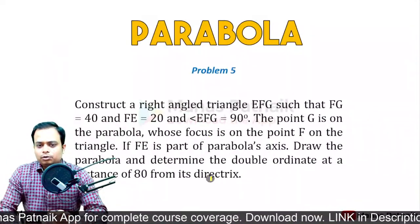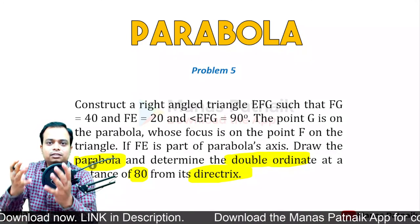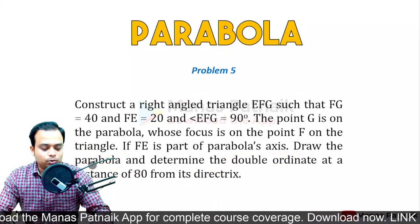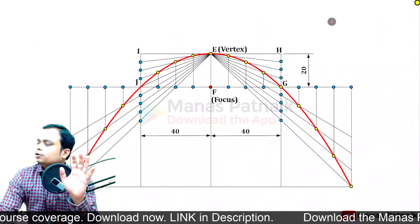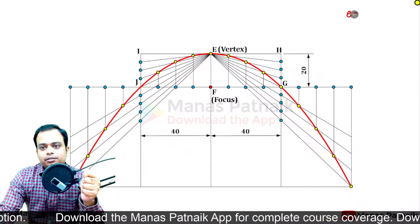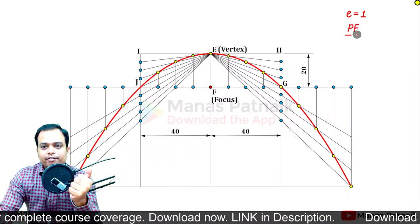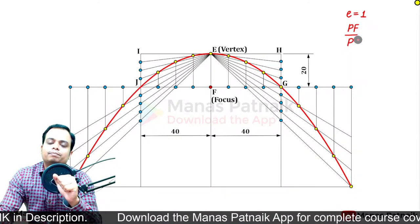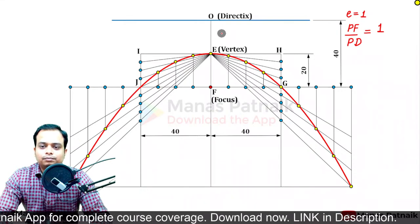Now we need to mark the double ordinate at a distance of 80 mm from the directrix. The parabola is visible but where is the directrix? Recall the important parameter - eccentricity. For a parabola, eccentricity equals one: distance from focus divided by distance from directrix equals one. So the directrix will be located where this ratio holds.